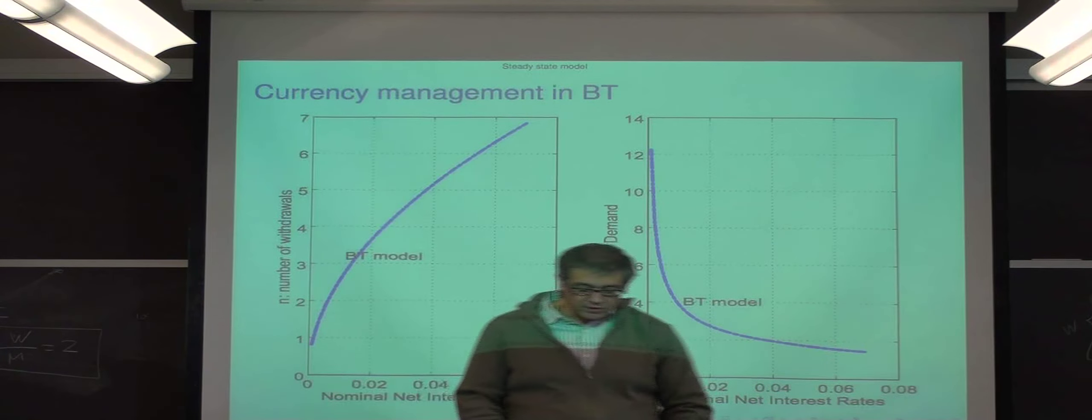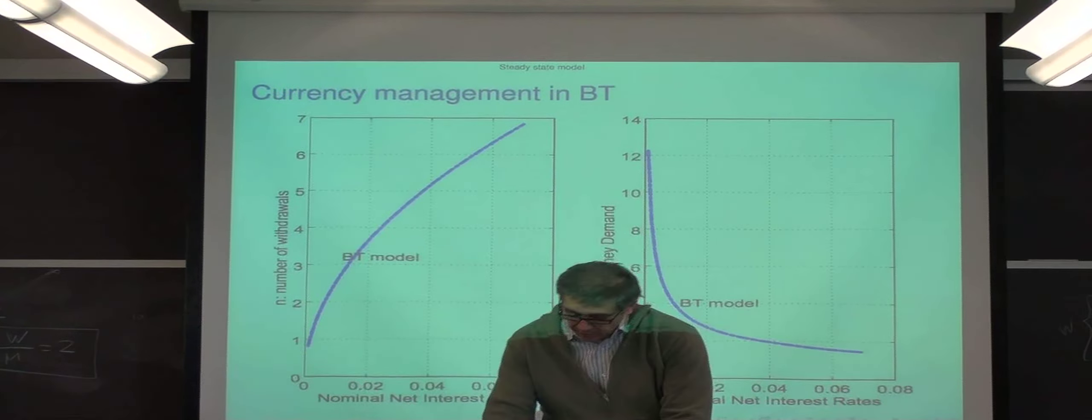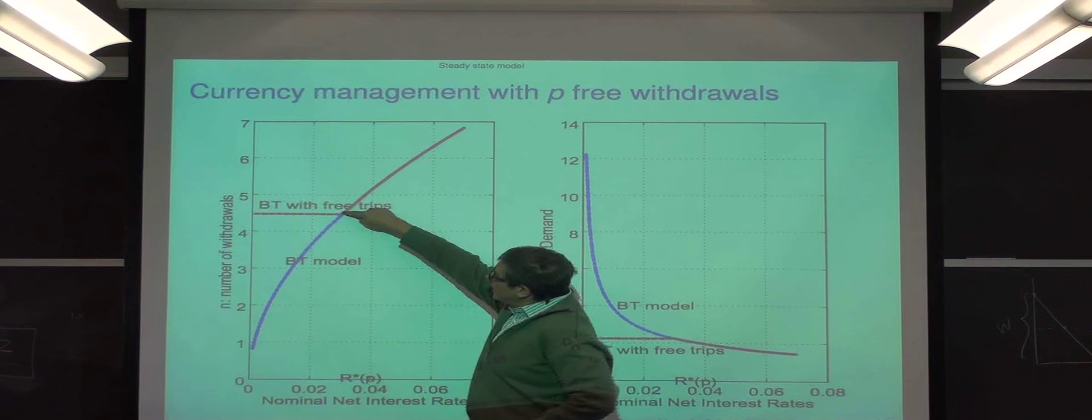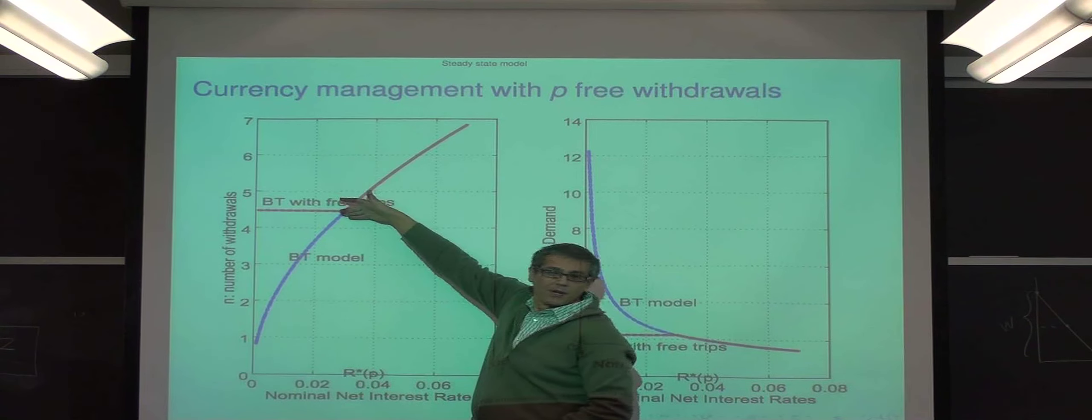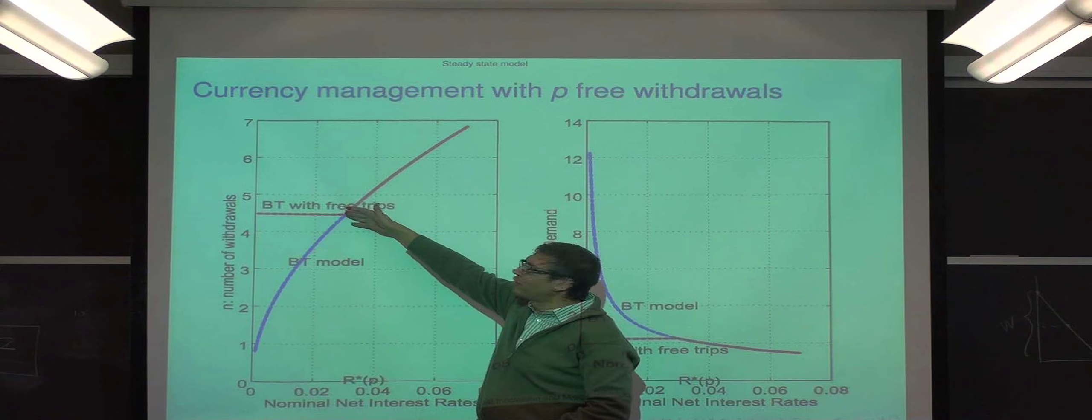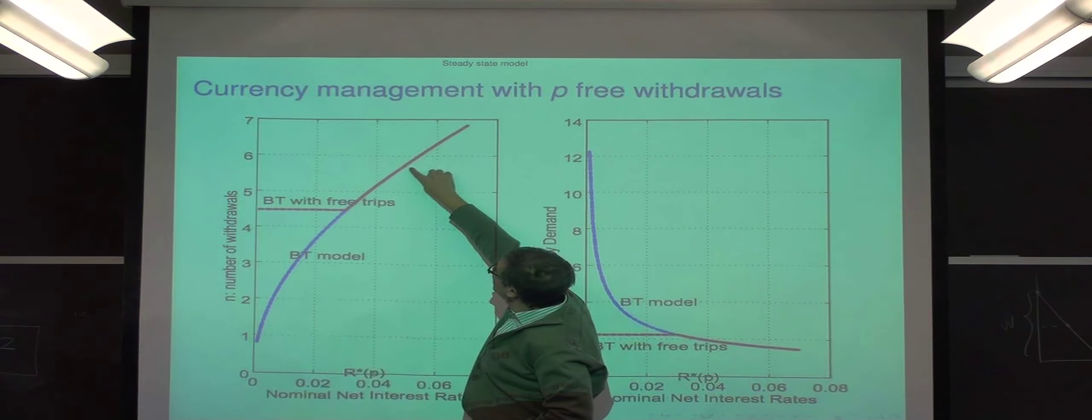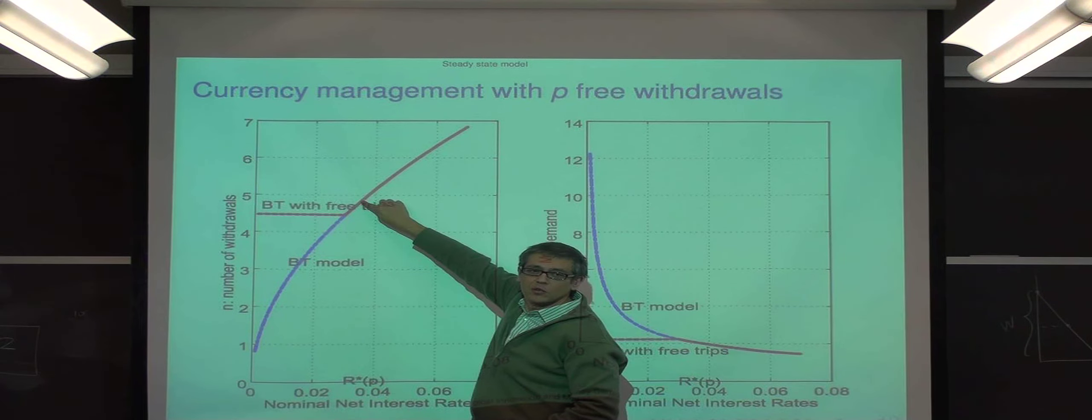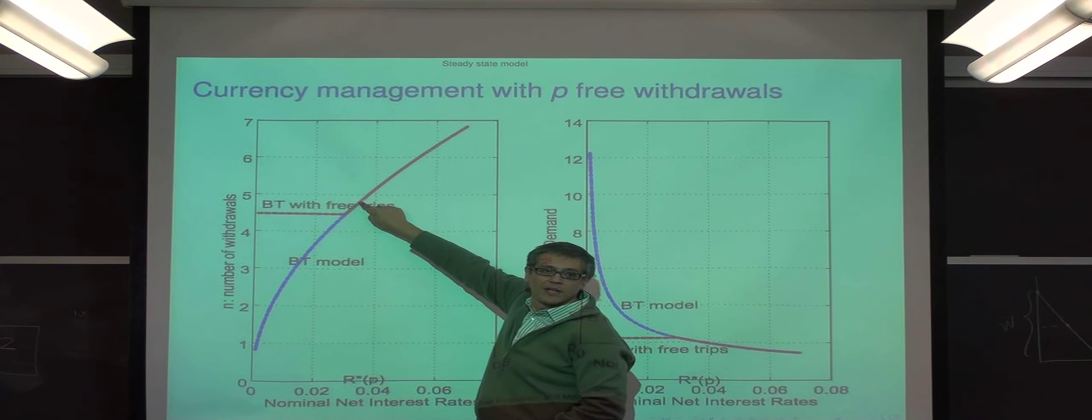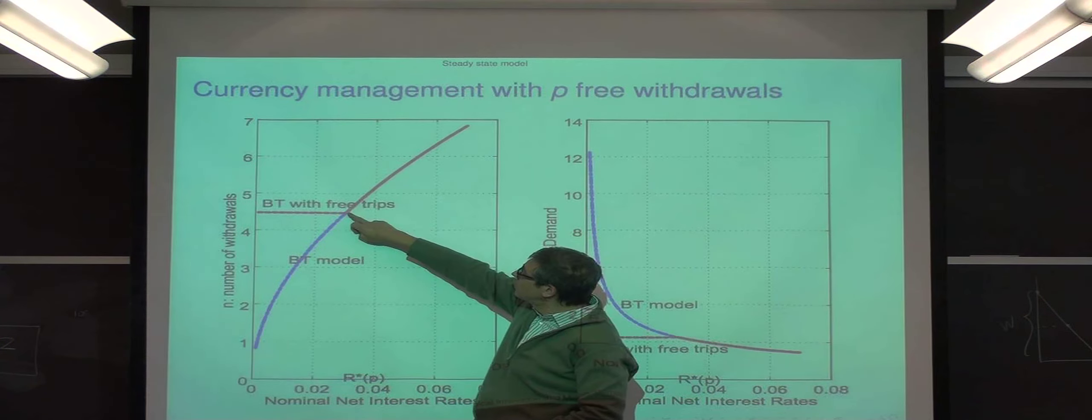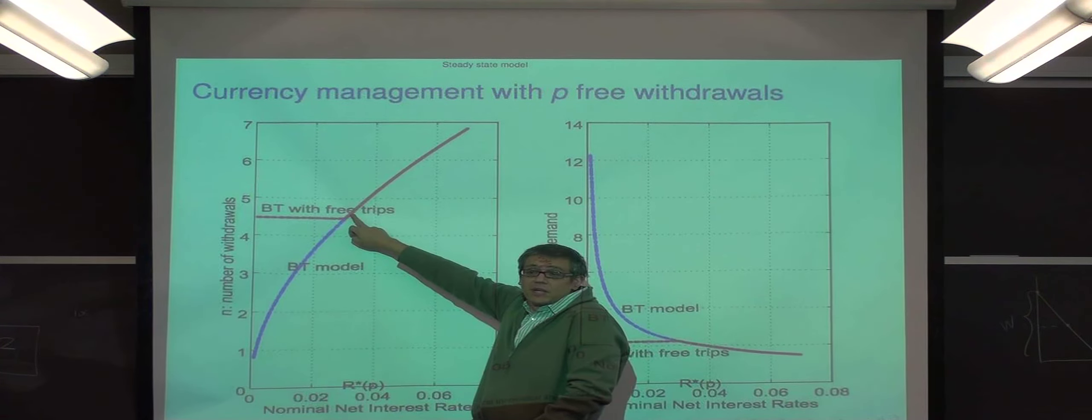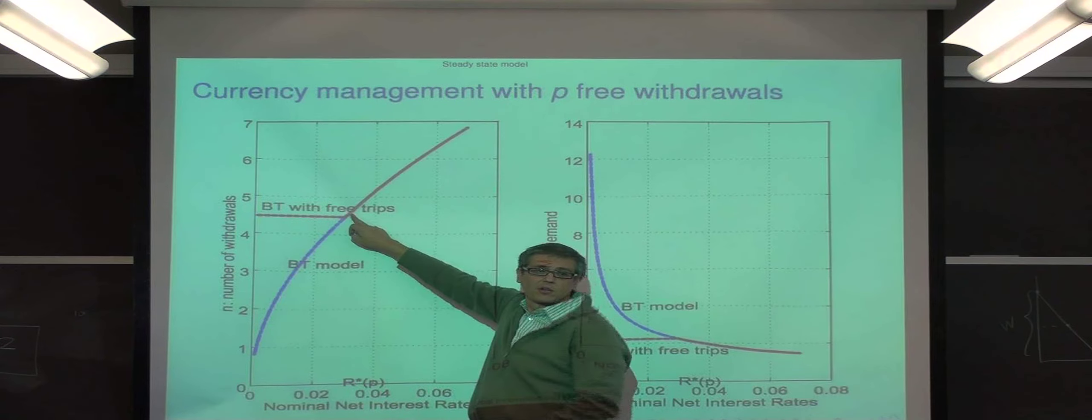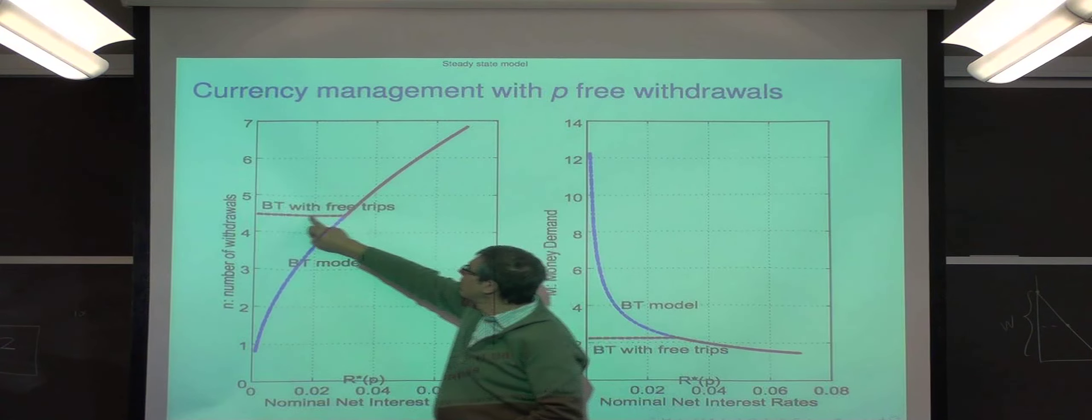Now with this parameter P, things change a little bit, because here we have four and a half trips, you're not going to make more than four. So suppose the interest rate keeps going down, now what you'd like to do is economize on the trips. But in this version of the model that I told you, you have four and a half trips that are free, so what's the point of economizing that? So you're just going to be flat here.